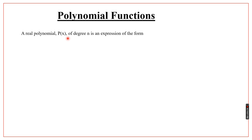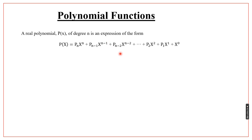A polynomial function p(x) of degree n is an expression of the form: p(x) = pₙxⁿ + pₙ₋₁xⁿ⁻¹ + pₙ₋₂xⁿ⁻² + ... + p₂x² + p₁x + p₀x⁰. This form is called the polynomial function form. Here p₀, p₁, ..., pₙ are all real numbers, and n is an integer.